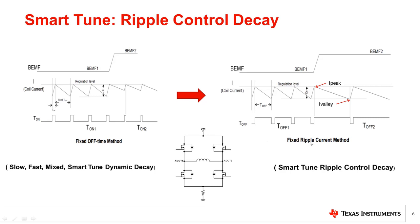SmartTune ripple control decay operates differently than dynamic decay by setting an i-valid level alongside the i-trip level. When the current level reaches i-peak, the motor drive turns off the high-side FET and then turns on both low-side FETs. But instead of entering slow decay until the t-off time expires, the driver enters slow decay until i-valid is reached. In ripple control mode, t-off varies depending on the current level and operating conditions. This method allows much tighter regulation of the current level by minimizing the ripple current magnitude and increasing motor efficiency and system performance. SmartTune ripple control decay can be used in a system that can tolerate a variable off-time regulation scheme to achieve small current ripple in current regulation.